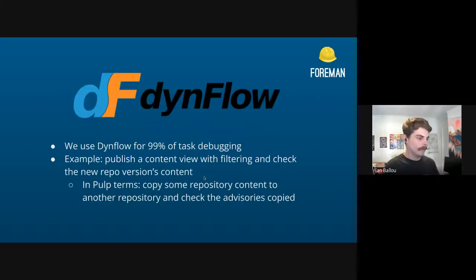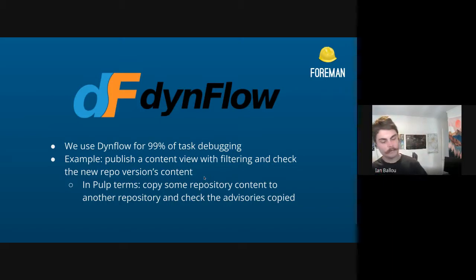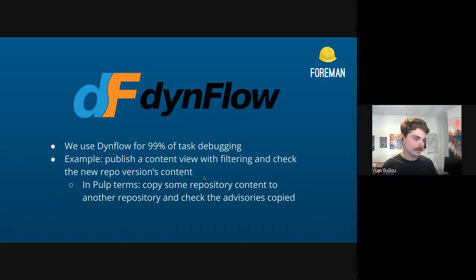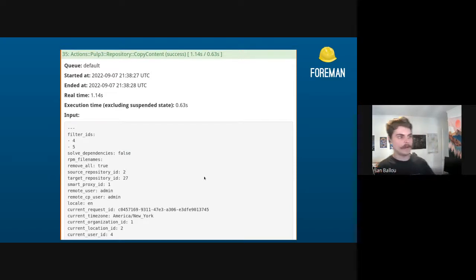Another interesting area for our debugging is tracking Pulp tasks. We use something called Dynflow to track our tasks — because in Foreman/Katello we have our own tasks that can spawn Pulp tasks, and we use this 99% of the time for task debugging because it shows everything in full right from Pulp. For example, let's say you publish a content view with filtering, which tells Pulp to copy content. This gets into a complicated situation and we want to check the version's content, maybe indexing is not working.